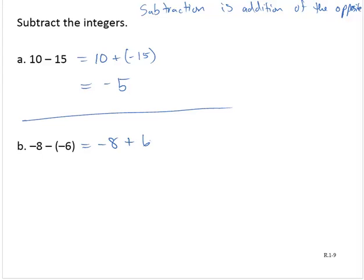I am now adding numbers with different signs. I keep the sign of the larger. 8 is larger than 6, so negative, and I find the difference. The difference between 8 and 6 is 2, so therefore negative 2.